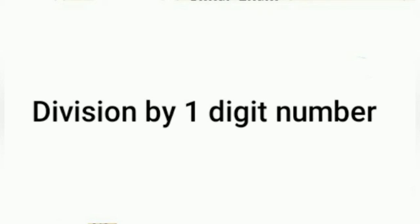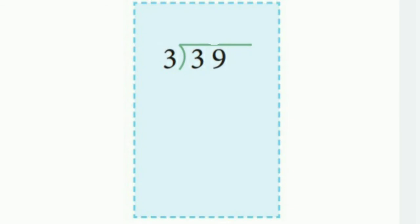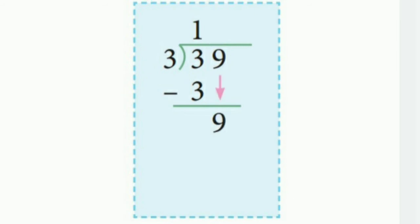Here we have 39 divided by 3. We have to divide 39 by 3. The first step is to divide 3 by 3. As you know, 3 ones are 3. Then 3 minus 3 is 0. Then we have to write 9.